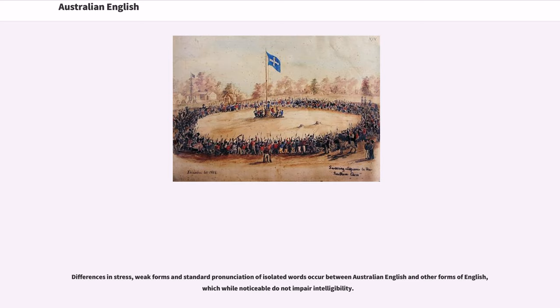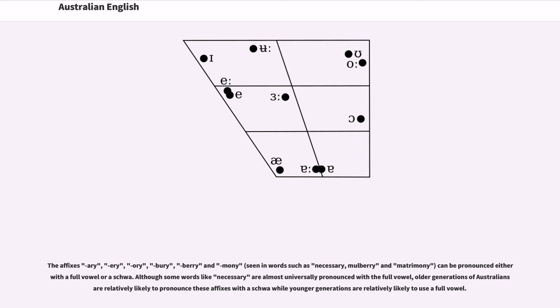Differences in stress, weak forms and standard pronunciation of isolated words occur between Australian English and other forms of English, which while noticeable do not impair intelligibility. The affixes -ary, -ery, -ory, -berry and -mony, seen in words such as necessary, mulberry and matrimony, can be pronounced either with a full vowel or a schwa. Although some words like necessary are almost universally pronounced with a full vowel, older generations of Australians are relatively likely to pronounce these affixes with a schwa while younger generations are relatively likely to use a full vowel.